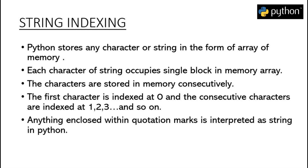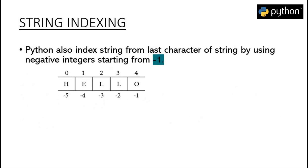Now we will see how we can access the individual character of a Python string. To understand that we have to first understand how Python stores any string in memory. A string is stored as an array in a block of memory, and an array is a holding structure in which the individual holding cells are consecutive in nature. The first character of the string is stored at the 0th position, and the last character is stored at the position which is 1 less than the total length of the string.